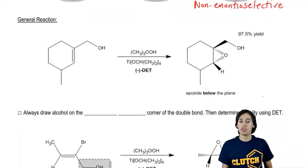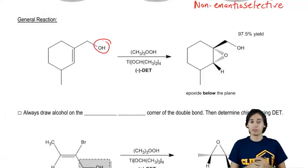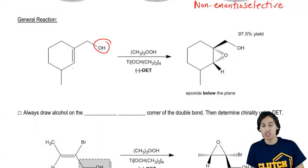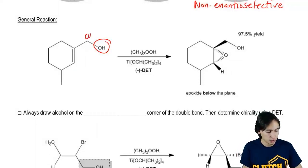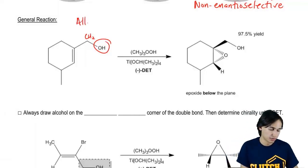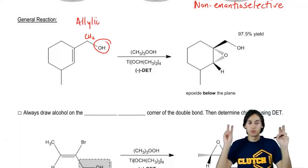So here, as you'll notice, I have an allyl alcohol. This is my allyl alcohol right here. The reason we call it allyl is because it is next to a double bond. It has a CH2 and then it has an OH. So this is allylic. That's a position word.